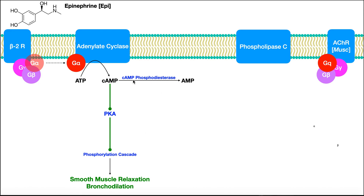In a couple minutes, we'll actually see a medication that affects this enzyme to produce more bronchodilation. This other pathway over here is going to do the exact opposite. This is an acetylcholine receptor — specifically muscarinic — and this is actually a receptor that is activated by the vagus nerve, which is cranial nerve 10. Some of the branches of it actually have direct contacts to the lungs and they release acetylcholine, which binds to this acetylcholine receptor.